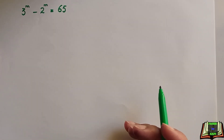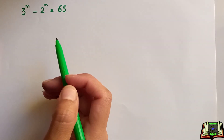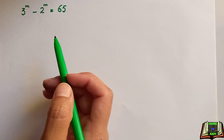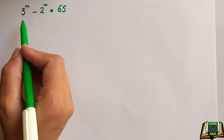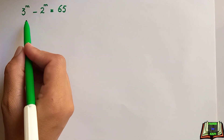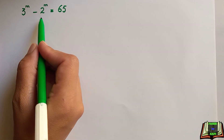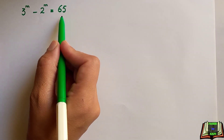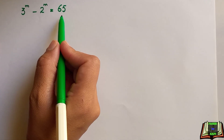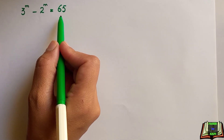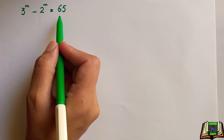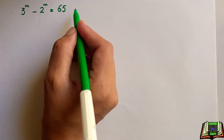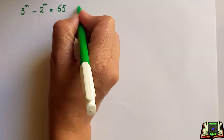Welcome back. We have a nice exponential problem: 3 to the power m minus 2 to the power m is equal to 65. We have to find the value of m.